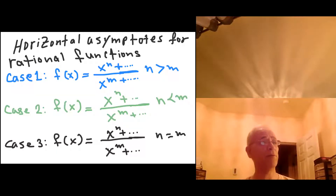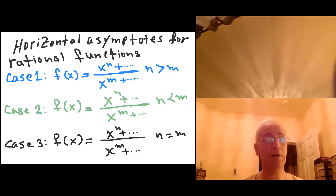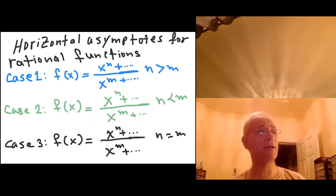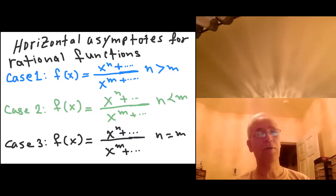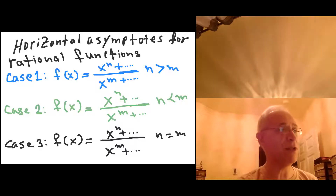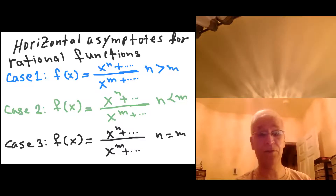Hello, Math 141. We are talking about horizontal asymptotes for rational functions. There are three case scenarios when you have a rational function.